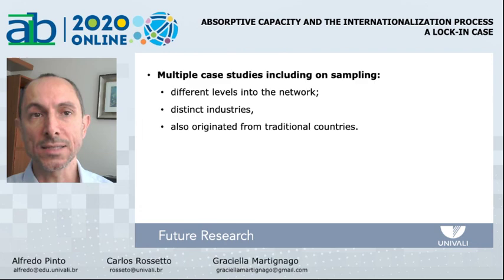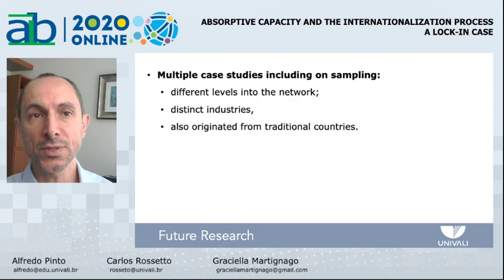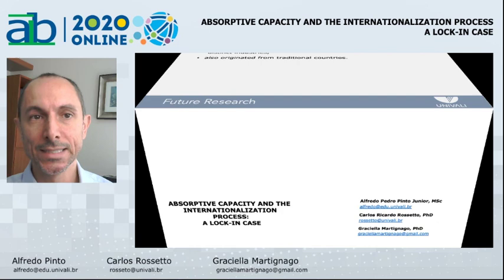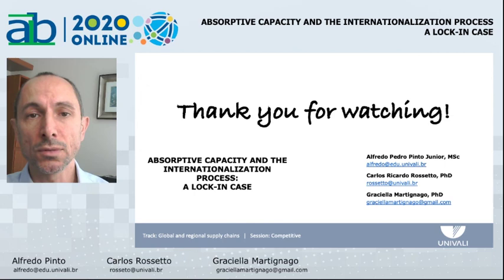Future research should test the proposed relations in multiple case studies, possibly including in the sampling companies at different levels of a given network, distinct industries, or also originating from traditional countries. We thank you for watching our presentation and remain at your disposal for comments and questions on the AIB online platform and also on the emails below.